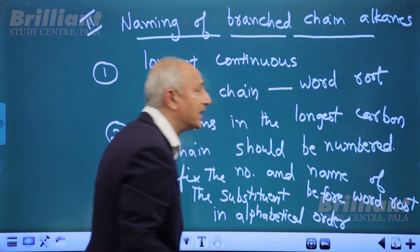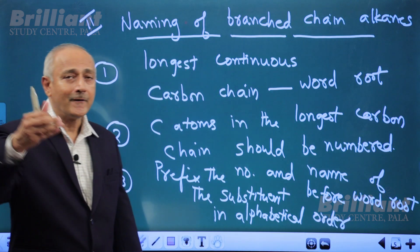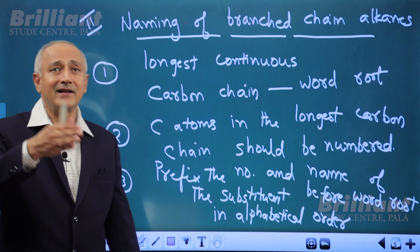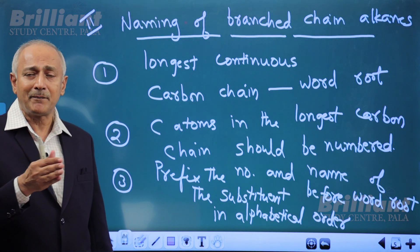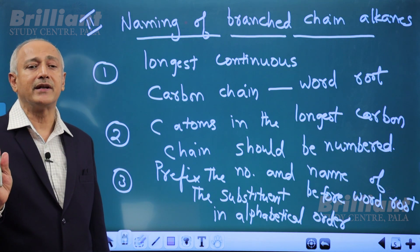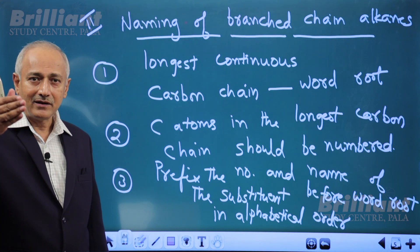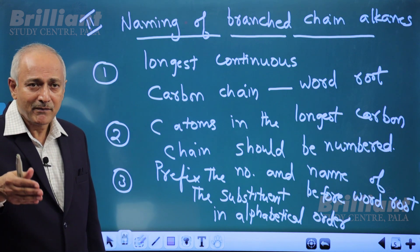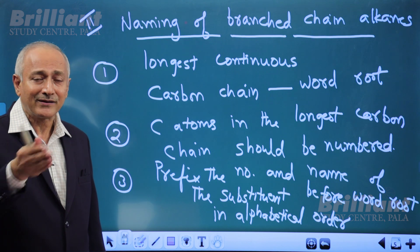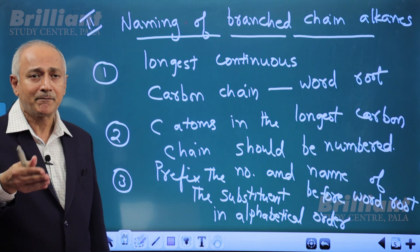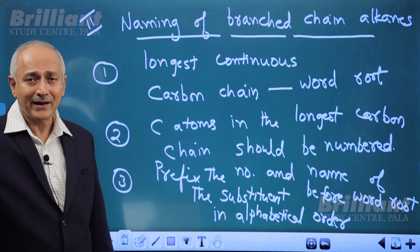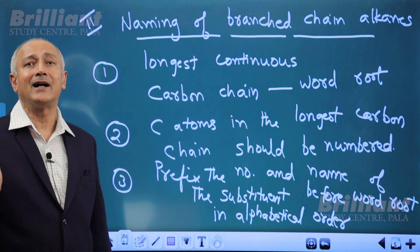Third rule: prefix the number and name of the substituent before the word root, in alphabetical order. For example, if methyl and ethyl come as substituents on the parent carbon chain, ethyl should be mentioned first because 'E' has alphabetical priority over 'M' of methyl.